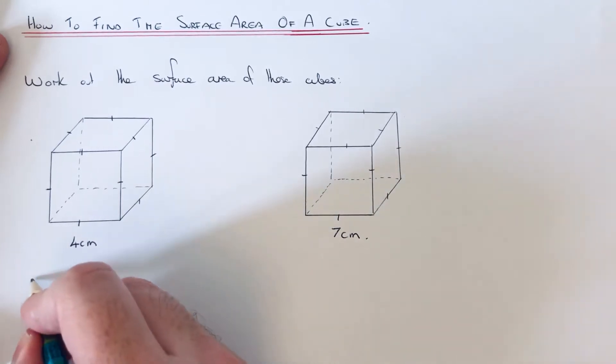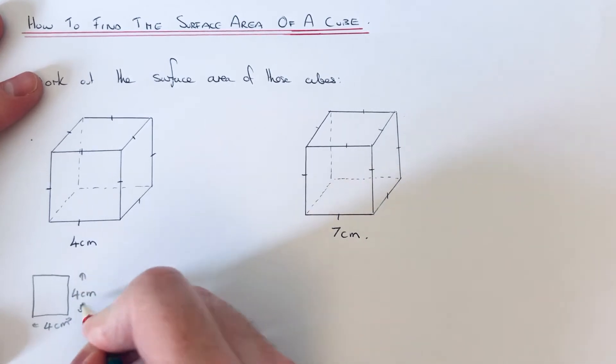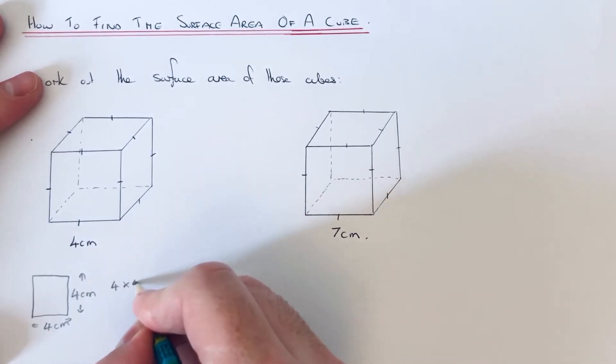If we work out the area of one of our faces, the two edges are 4 by 4, so 4 times 4...